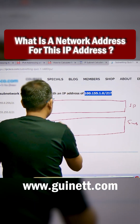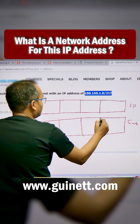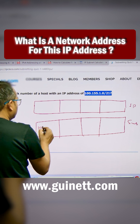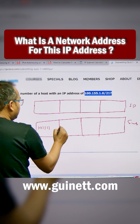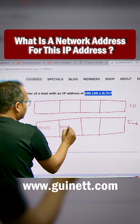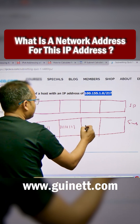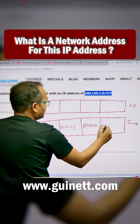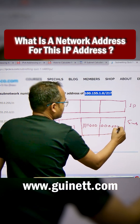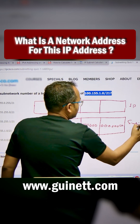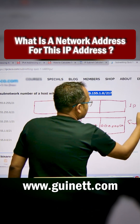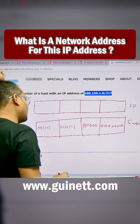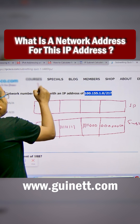You have to write the four blocks and convert each block. For slash 21, it's going to be ones — eight times, then eight times again, then five ones, followed by five zeros and then eight zeros. This is your subnet mask. For the IP address, you convert 100.155.1.0 using this formula.